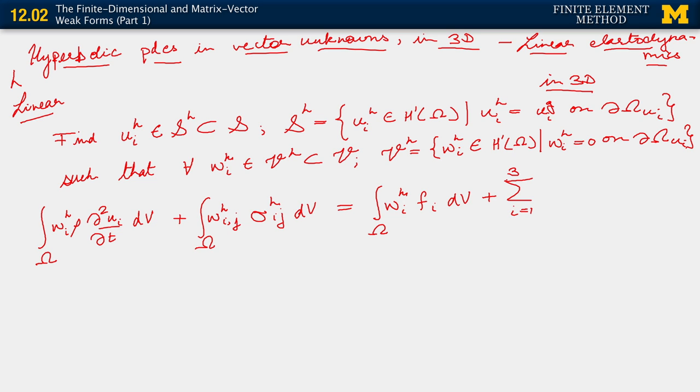...integral over the corresponding Neumann boundary, w^h_i t̄_i dS, okay? That is our finite dimensional weak form.